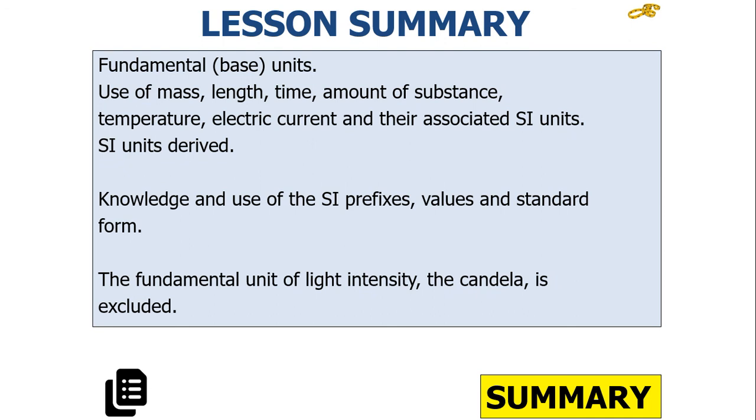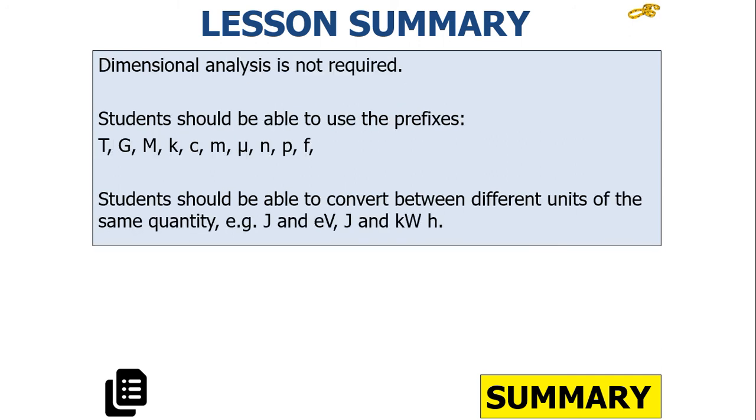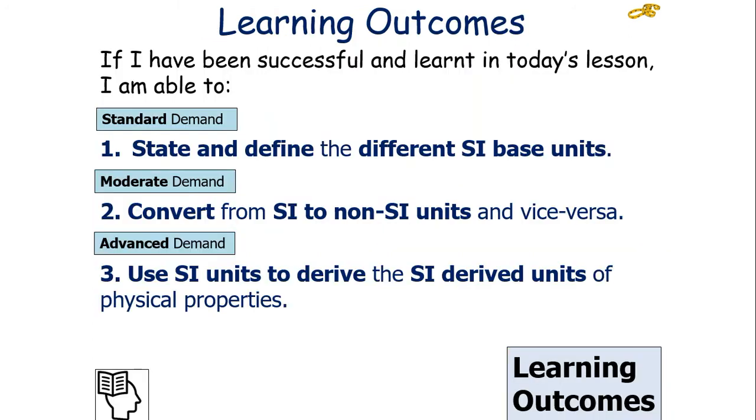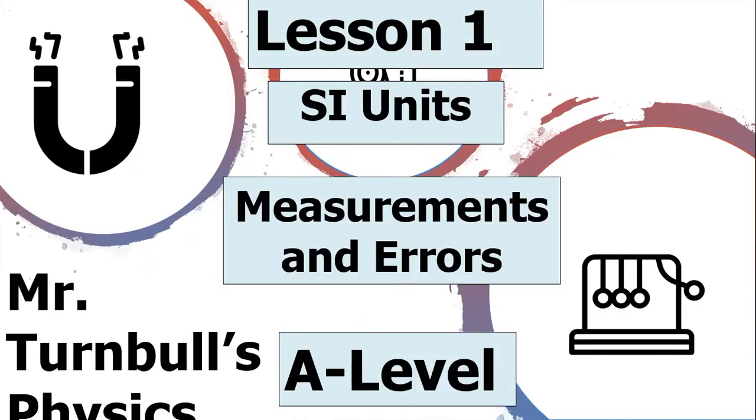To summarize what we've learned in today's lesson, we know the fundamental base units of the universe: mass, length, time, amount of substance, temperature, electrical current, and the associated SI units. We know the derived SI units, and we have knowledge and use of SI prefixes and values in standard form. We can also use the prefixes and convert between different units of the same quantity. If you've been successful and you've learned in today's lesson, you can state and define the different SI base units, you can convert from SI to non-SI units and vice versa, and we can use SI units to derive the SI derived units of physical properties. I hope you've enjoyed today's lesson on SI units in the measurements and errors topic of AQA A-level physics. Thank you, and have a lovely day.